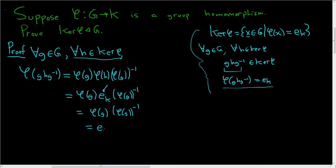So here we have phi of g inverse, and this is just the identity in K. So we showed that phi of ghg inverse is equal to the identity in K. That's precisely what it means for ghg inverse to be in the kernel of phi.